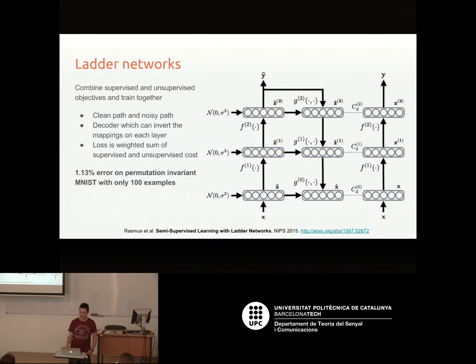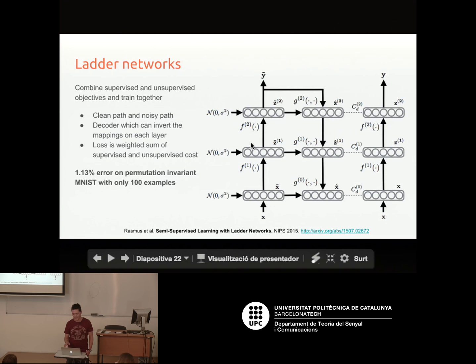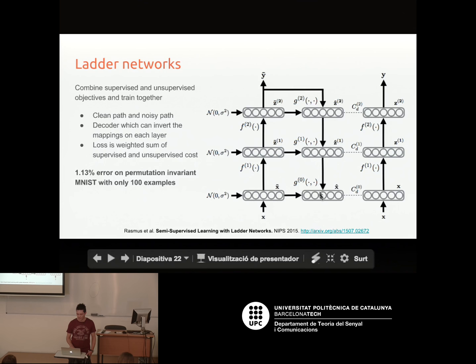One final method to mention is ladder networks, a recent approach that gets really impressive results on MNIST with very few labeled examples. Data comes in at the bottom; if a label is available, there's a classification loss at the top. Additionally, noise is injected into each layer, and the network tries to reconstruct each layer from the layer above combined with the noisy version of that layer, forcing each layer to be robust to noise. At test time, you remove the noise injection and go straight forward through the network. Doing something like this can achieve over 98% accuracy on MNIST with only 100 labeled examples.